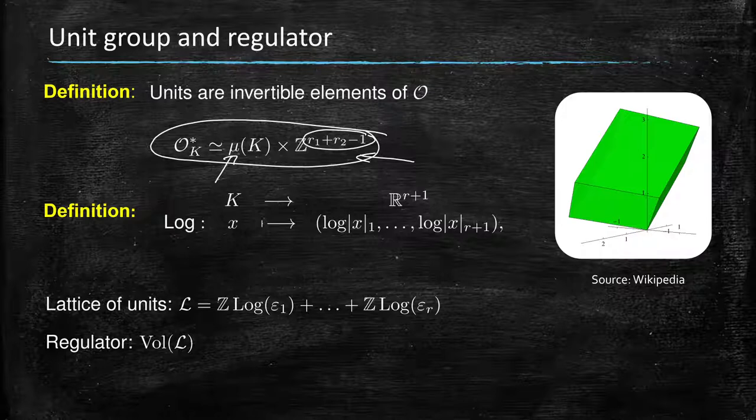One very important map is the log map that is a generalization of the usual log, where you take each embedding, so x_i is really just the absolute value of sigma_i of x, and so this vector allows us to define, to take the units and turn this structure into an additive group by the log...